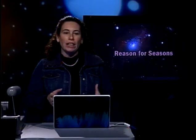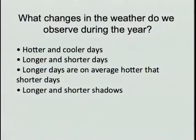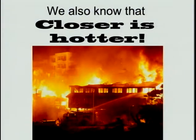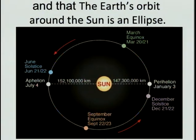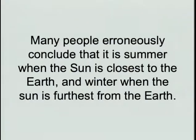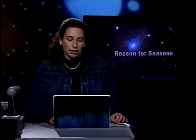Let's start by thinking about what we already know — things we observe every day. We see that there are hotter days and colder days, longer and shorter days, and longer days are on average hotter than shorter days. Another thing we experience is that closer is hotter. Combining this with the fact that Earth's orbit around the Sun is an ellipse, we erroneously conclude that summer is when the Sun is closest to the Earth, and winter when the Sun is furthest. This is not right.